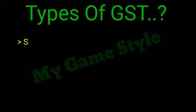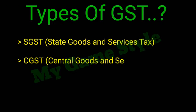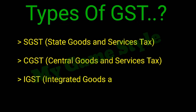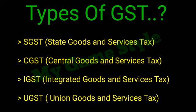Types of GST: SGST — State Goods and Services Tax; CGST — Central Goods and Services Tax; IGST — Integrated Goods and Services Tax; UGST — Union Goods and Services Tax.